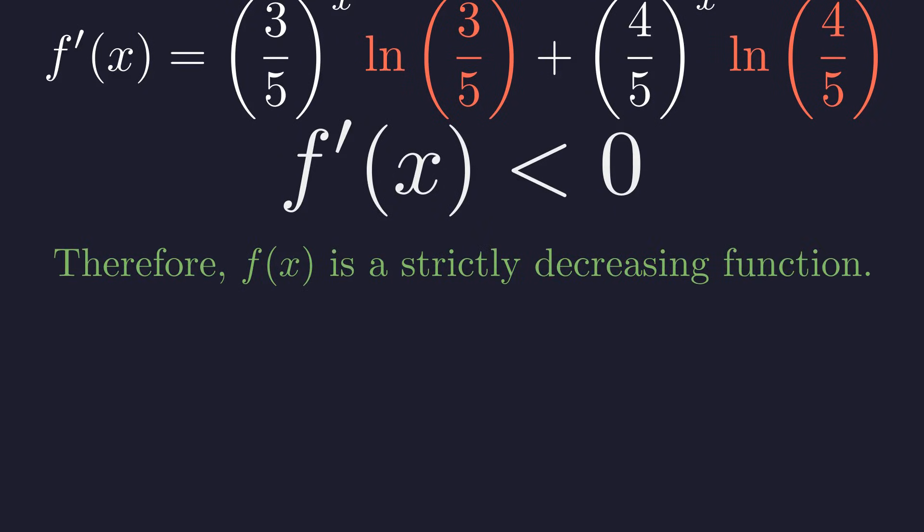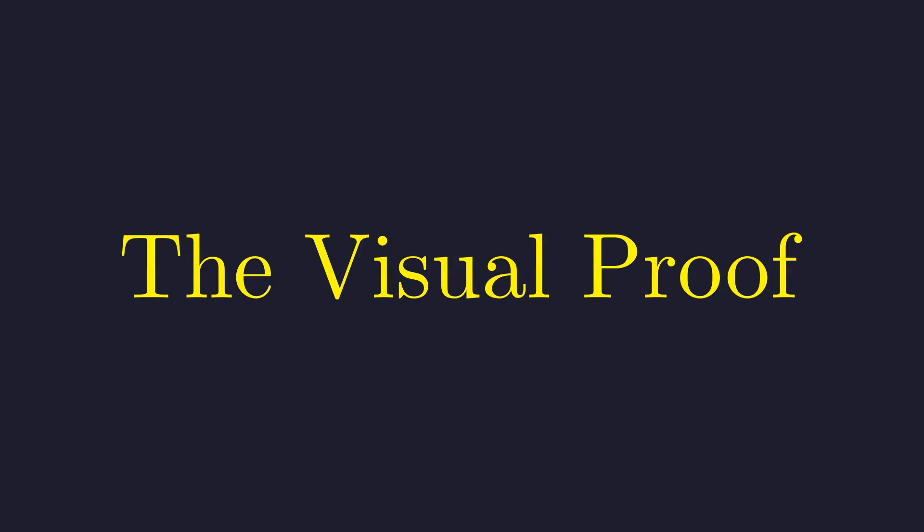And when a function's derivative is always negative, the function itself must be strictly decreasing everywhere. A strictly decreasing function can cross any horizontal line at most once.